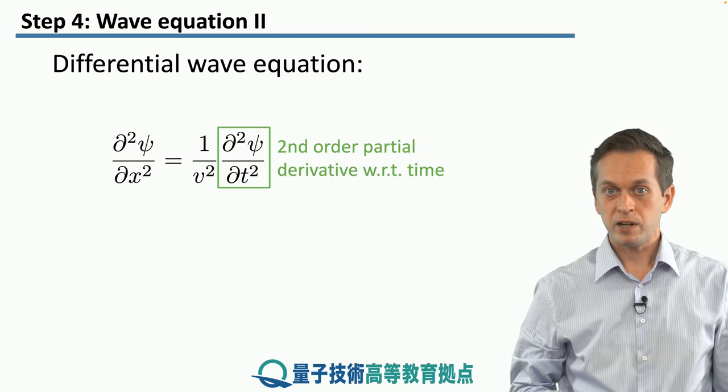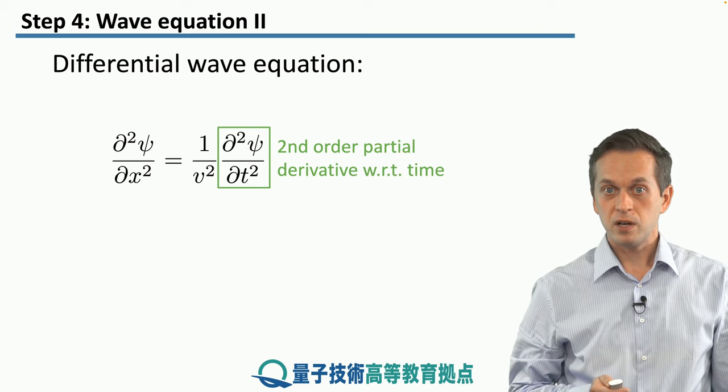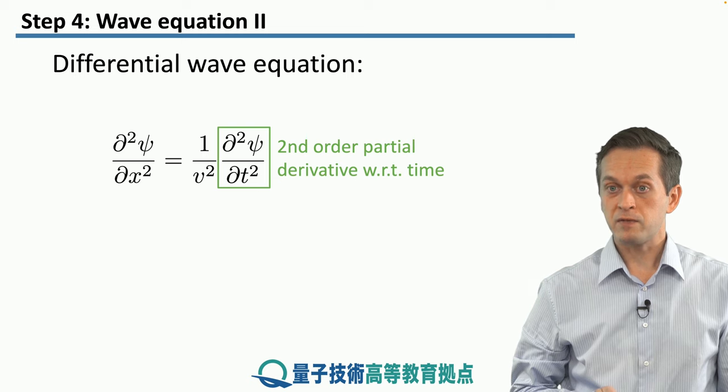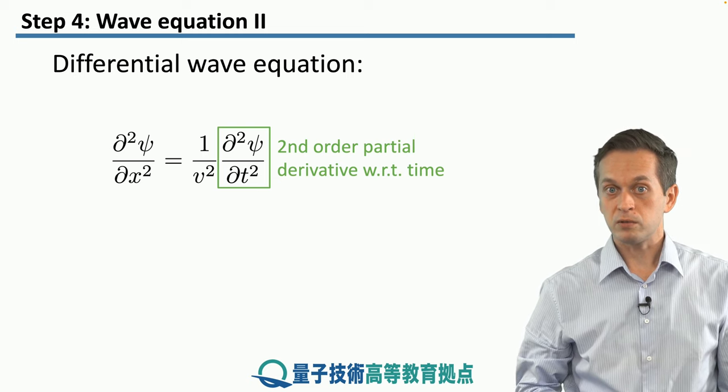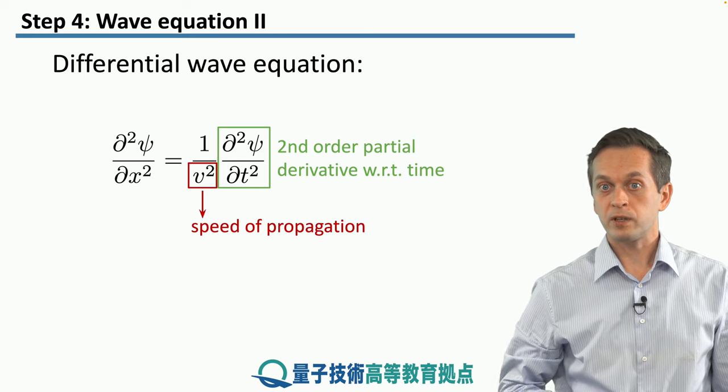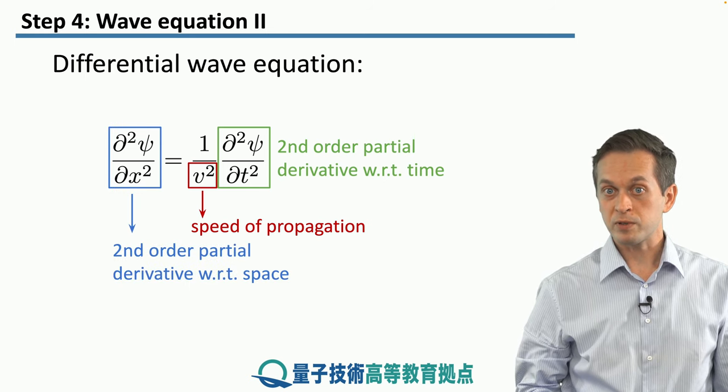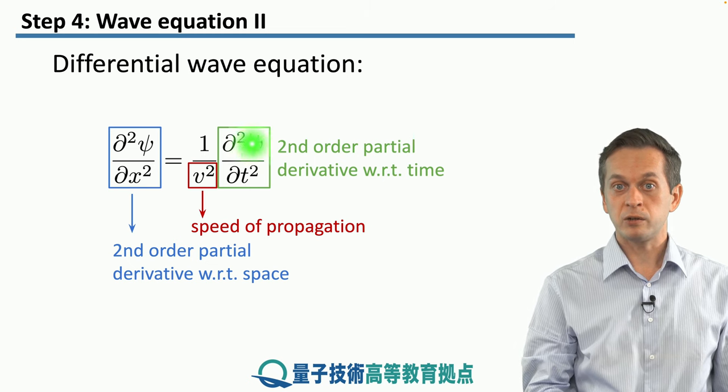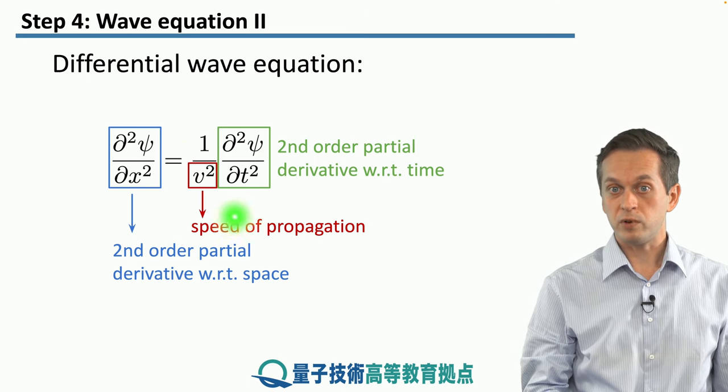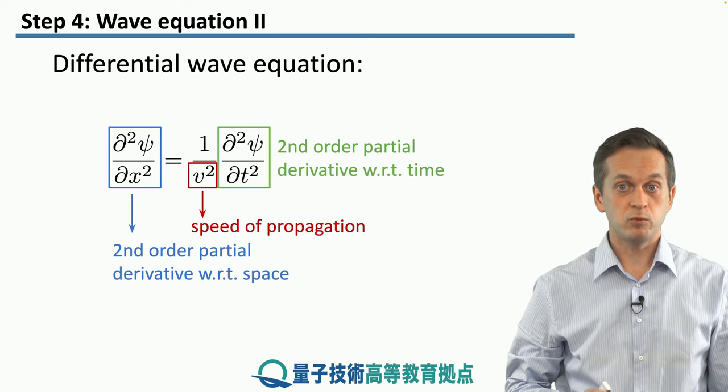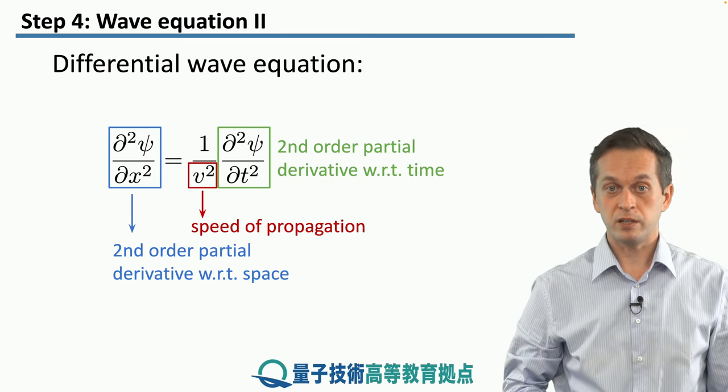And this is a very interesting relationship because it's relating how the psi is varying with respect to the spatial coordinate, and it's basically equal to the rate of how psi is varying with respect to time up to this multiplicative factor of one over v squared, where v, remember, is just a parameter that we can set. So that's not changing.